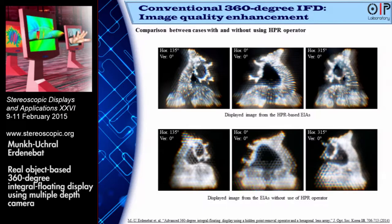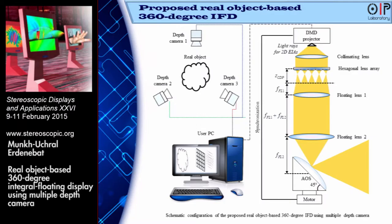Now, we propose a novel method to display a real object in the 360 degree integral floating display. Multiple depth cameras acquire the real depth information of a real object and reconstruct it as a point cloud model in computer graphics. From the reconstructed point cloud model, elemental images are generated through the given lens array specifications, projected by the DMD projector through the hexagonal lens array to reconstruct three-dimensional perspectives.